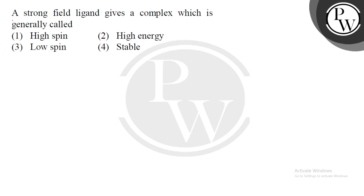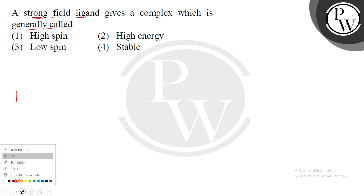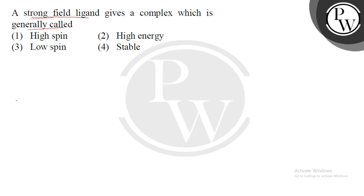Let's see the question. The question is about strong field ligands giving a complex generally called a strong field ligand complex. If you have a metal ion with an electronic configuration, let's say we have a metal ion that is isolated, with a D7 electronic configuration — so 7 electrons present here.